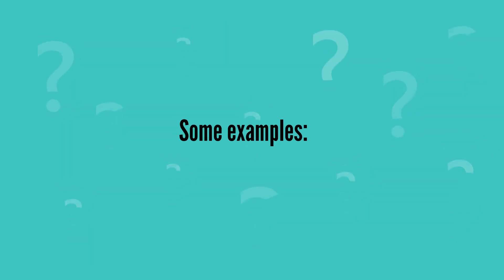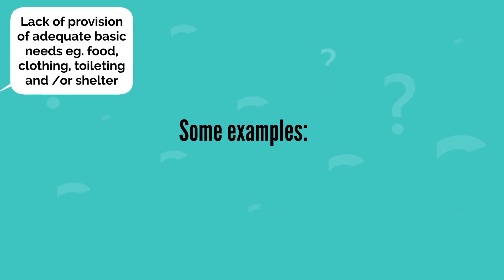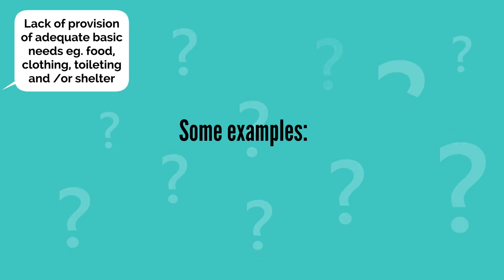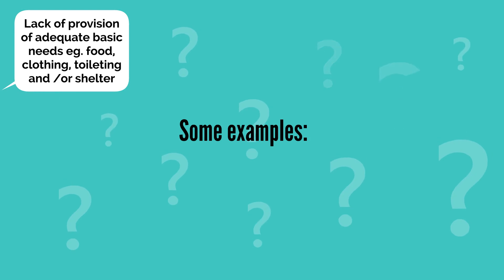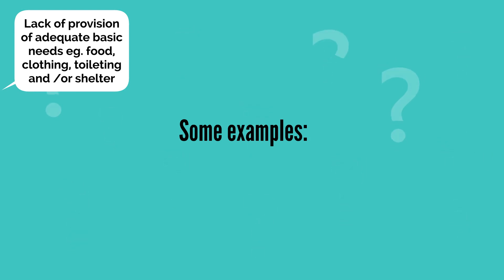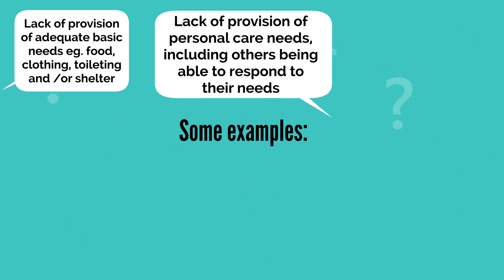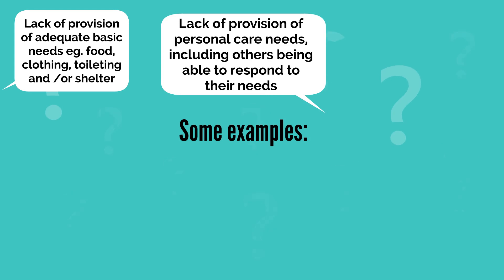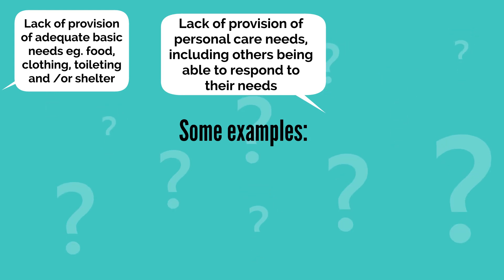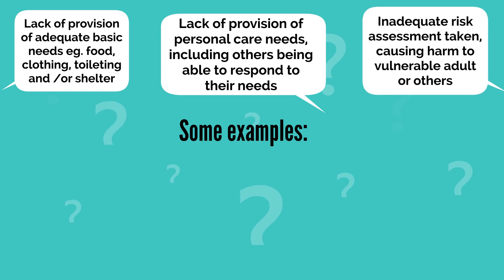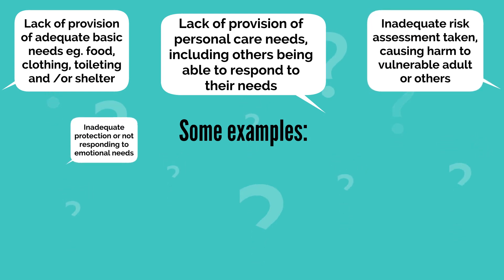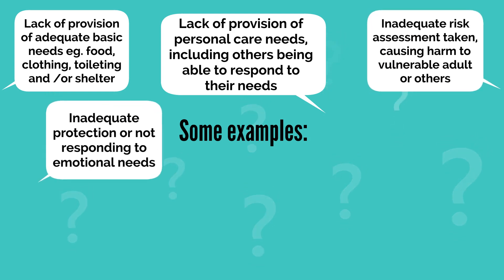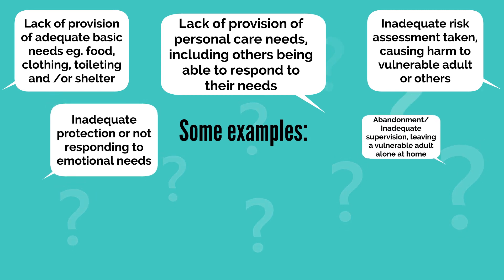Examples of this form of abuse are lack of provision of adequate basic needs, e.g. food, clothing, toileting and or shelter; lack of provision of personal care needs, including others being able to respond to their needs; inadequate risk assessment taken, causing harm to vulnerable adult or others; inadequate protection or not responding to emotional needs.